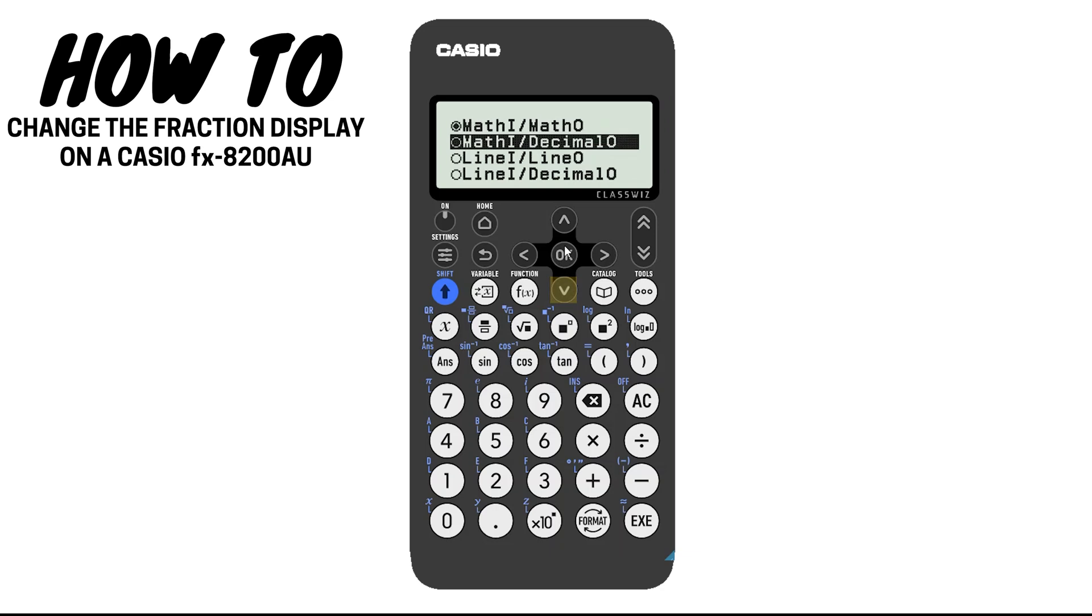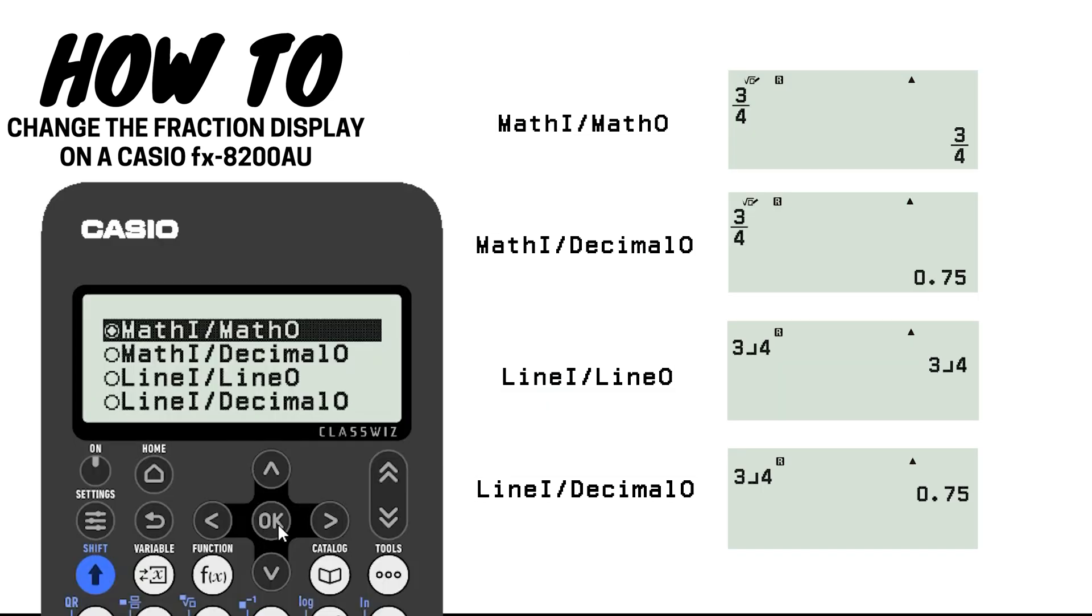You should now be on a screen with four options. Let's look at the different options and what they mean. The first word indicates your input display and the second word indicates your output display.